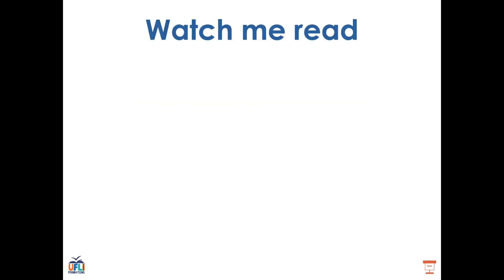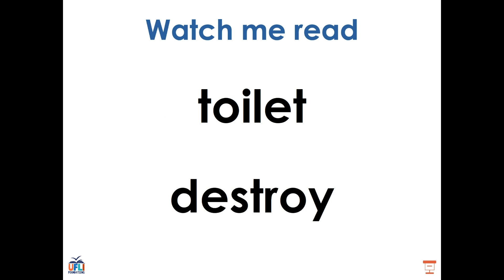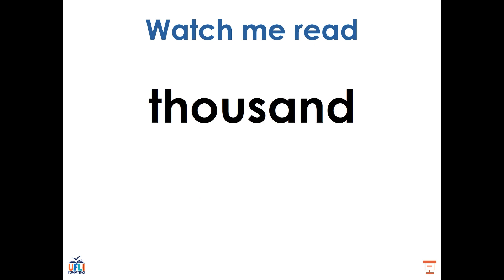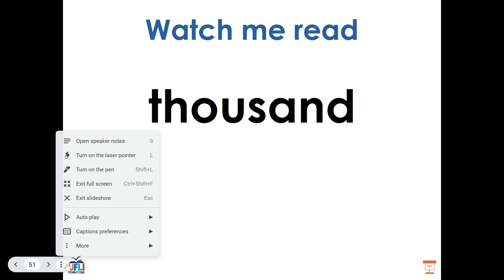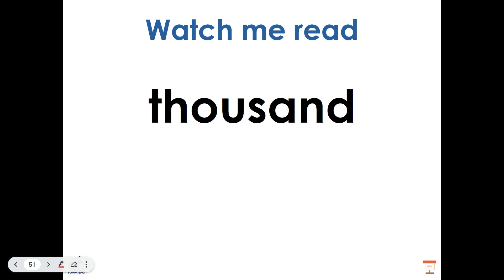Now let's take a look at some words. We've learned the word TOILET and the word DESTROY — we broke them into their syllables to find those diphthongs and vowel teams to help us sound them out. Now let's try a new word. This is the word THOUSAND. I can sound it out by looking at its syllables and finding my vowel teams and diphthongs. In my first syllable THOU, I have the diphthong OW being made by the letters OU. In my second syllable, I have the vowel A. THOUSAND.